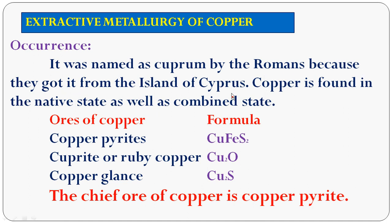The extraction of copper: it was named as Cuprum by the Romans because they obtained it from the island of Cyprus. Copper is found in native state and also in combined state. The important ores of copper are: copper pyrites (CuFeS₂), cuprite or ruby copper (Cu₂O), and copper glance (Cu₂S).